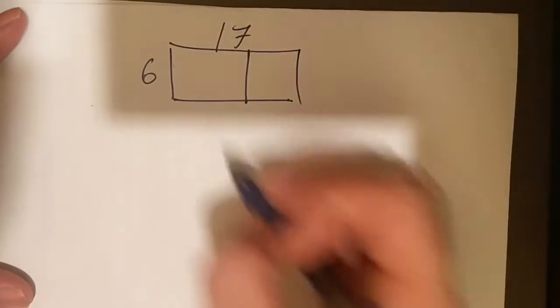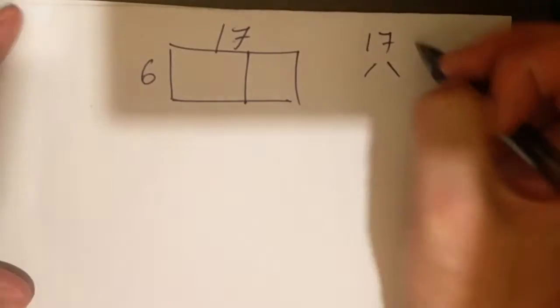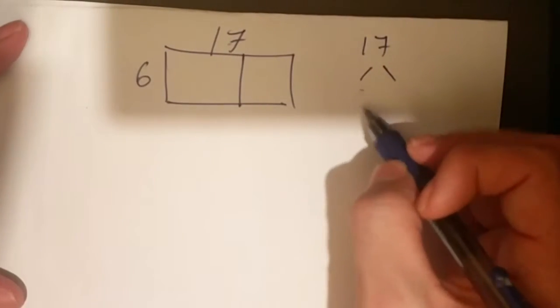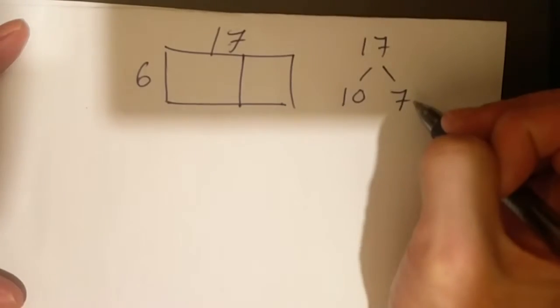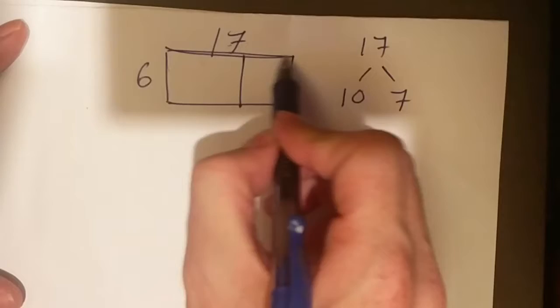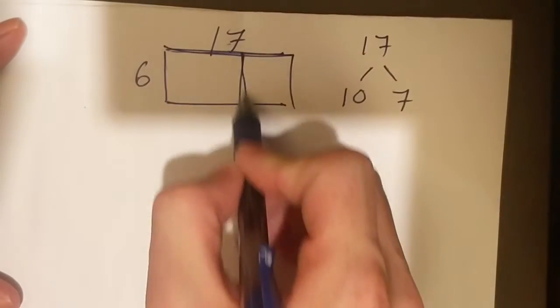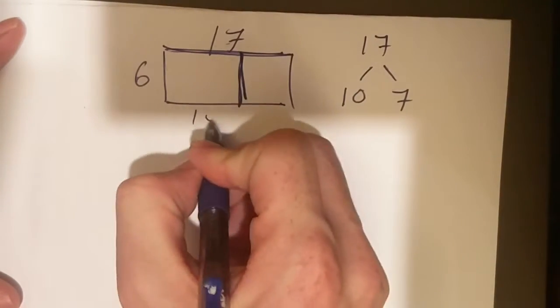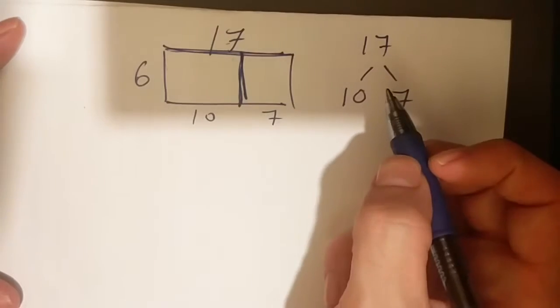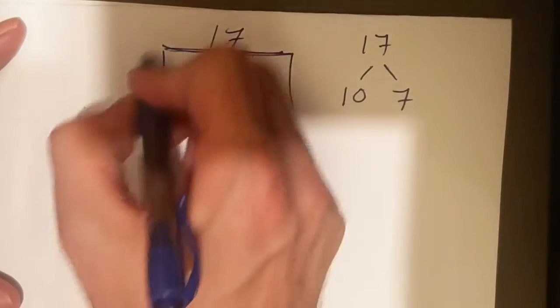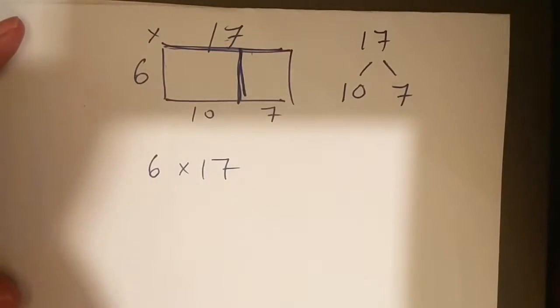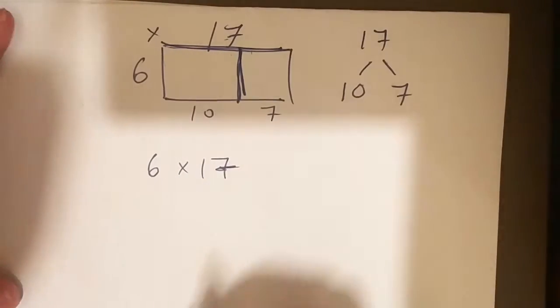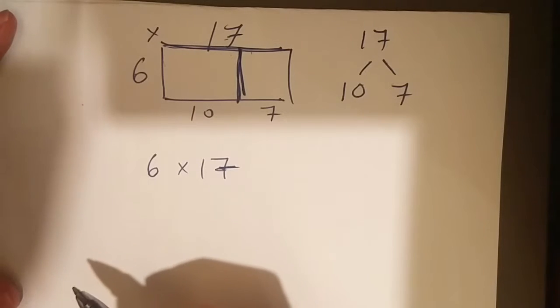I can split this up. 17 can be decomposed, or if you remember my pair bonds, can be split up to 10 and 7. So this length of 17 can actually be divided or split up into 10 and 7. Alright, so before I had my 6 times 17, and you know what? I really don't know what that is.